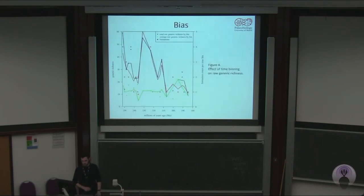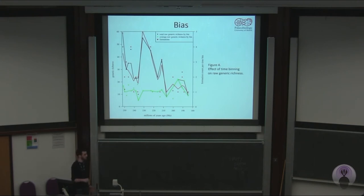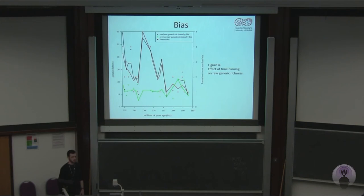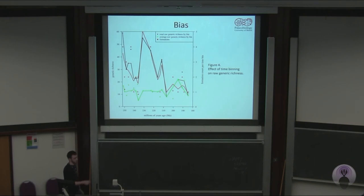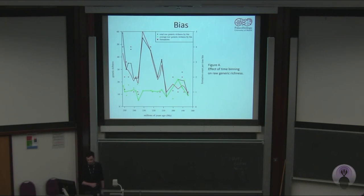Briefly, I'd like to talk about bias in the data. We've mentioned how we can correct specimen count through time. But a major issue with using time bins is that the number of formations contributing to each time bin is not consistent through time. As you can see, formation counts very much warp the total raw richness through time, and this is the data being corrected — so this bias might leak through into our rarefied data.